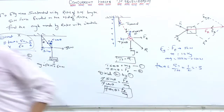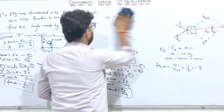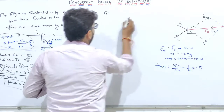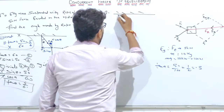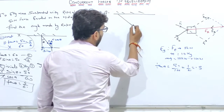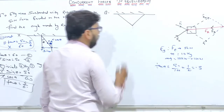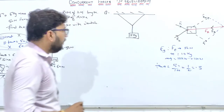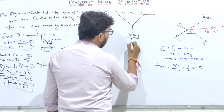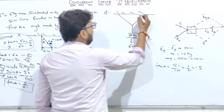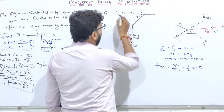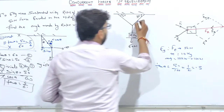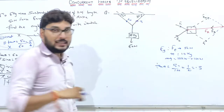Ek aur question: ek rigid support hai jisse do ropes lagi hain — T1 aur T2. Dono se ek mass hang kiya hua hai. Mass 6 kg hai toh weight 60 N hai. T1 wali rope 30 degree angle par hai aur T2 wali rope 60 degree angle par hai. Aapko dono ropes mein tension calculate karni hai.